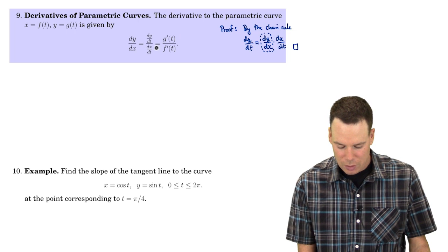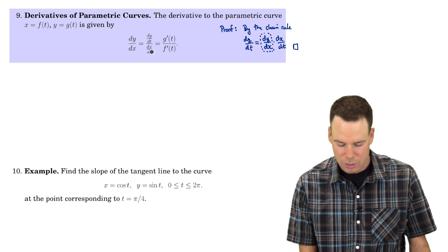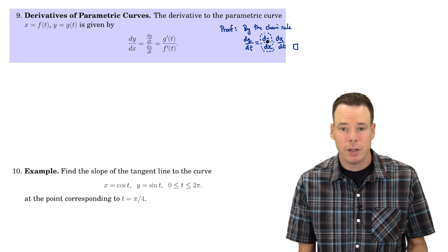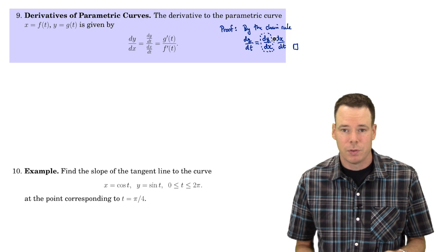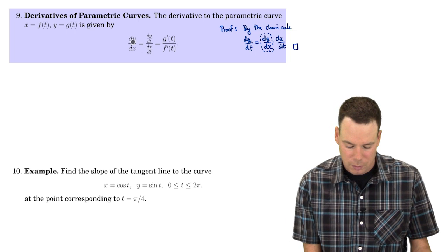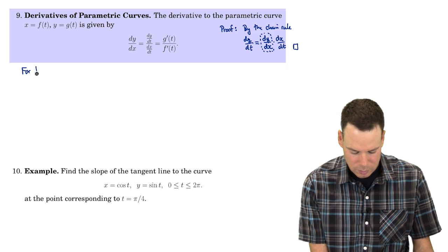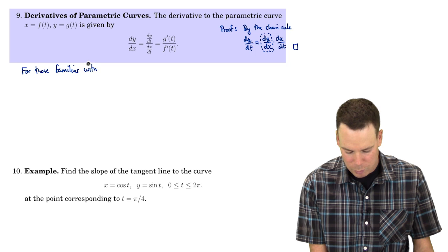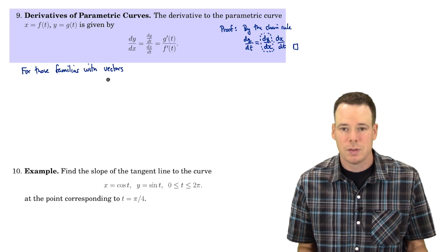I just wanted to make the connection with the chain rule, because this may look mysterious at first — that dy/dx equals dy/dt over dx/dt — but it's nothing more than the chain rule. However, that might not make it easy to remember. Even though it's coming from the chain rule, you might think that's still rather difficult to remember. There's one way I like to remember this relationship, and that is for those familiar with vectors, maybe from your physics classes, or you've done some geometry and worked with vectors in some context.